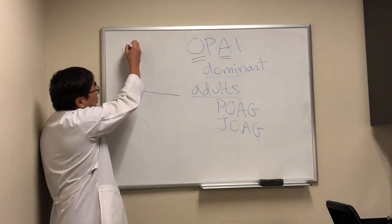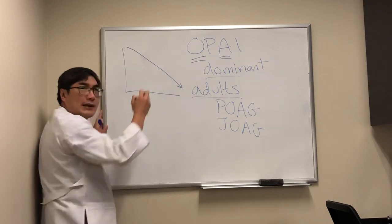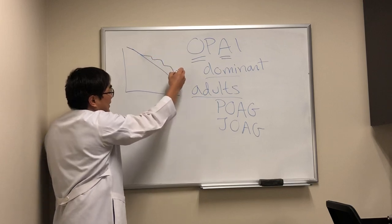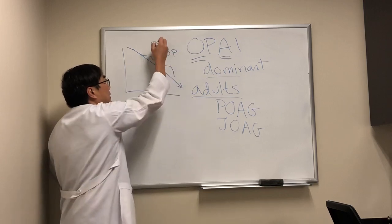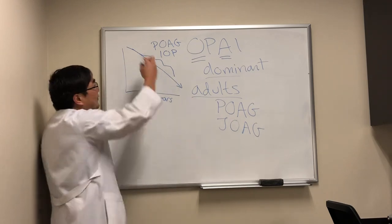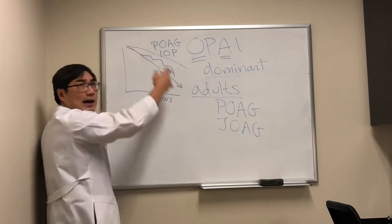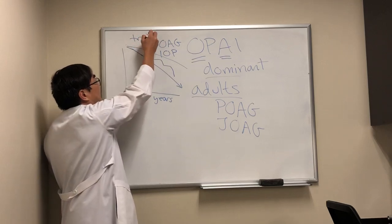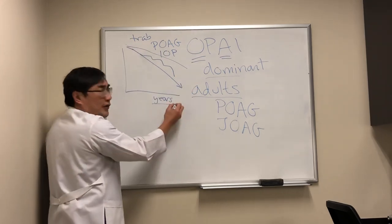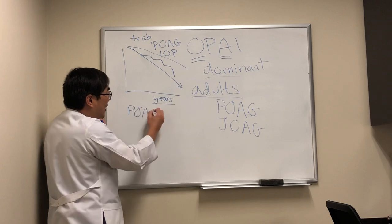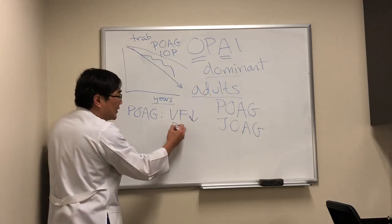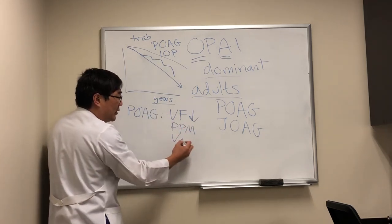Normally when you have primary open-angle glaucoma, the course is a painless progressive loss. You might be able to arrest the course and change it to a stepwise thing by modifying the intraocular pressure, but primary open-angle glaucoma is a chronic disease that slowly gets worse over years. You can modify the slope with surgery like trabeculectomy or shunt tube. The field loss is peripheral, but it tends to spare the papillomacular bundle, which means visual acuity is spared.